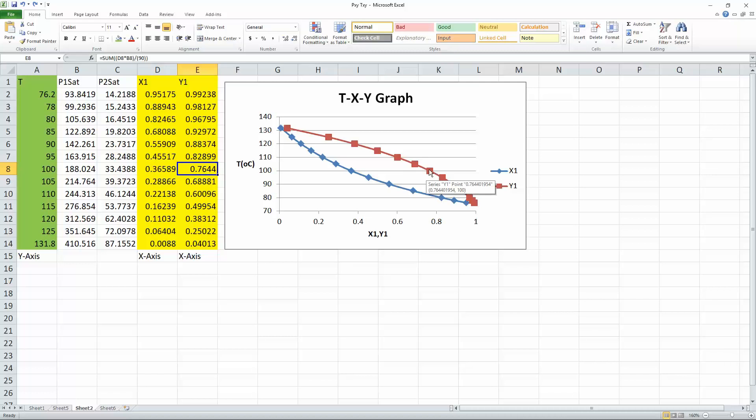So for y1, 0.76 corresponds to 100. However, for x1, to get 100, it's going to be 0.36589.